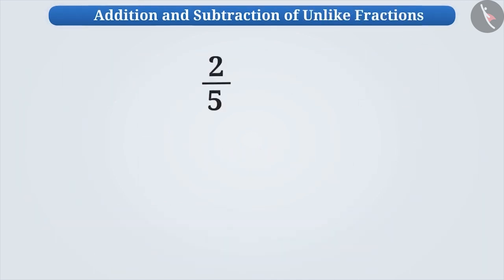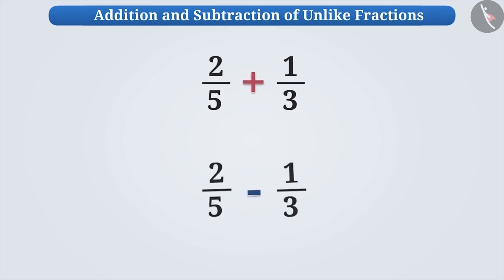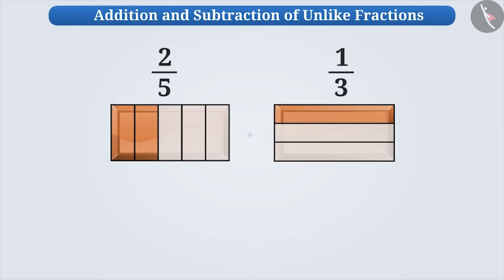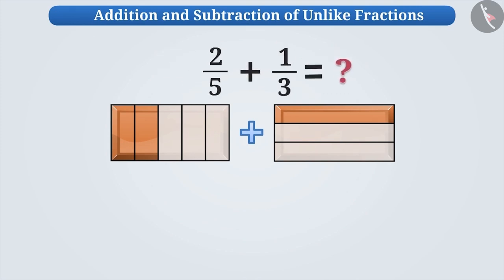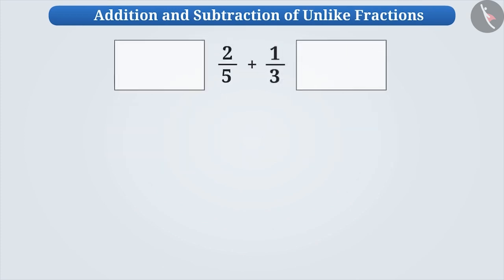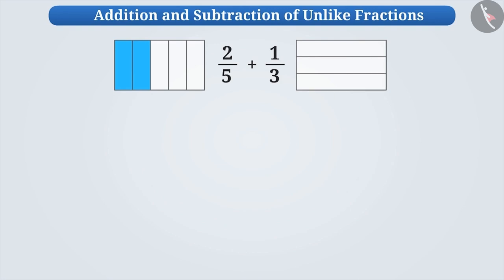Now let us understand the addition and subtraction of unlike fractions. Let us find out how much chocolate we get by adding two by five parts and one by three parts of a chocolate. To do so, first we make two equal rectangles. To represent the fraction two by five, we divide the first rectangle into five equal parts and shade two parts of it. Similarly, to represent the fraction one by three, we divide the second rectangle into three equal parts and shade one part of it. Since the size of the parts is not equal, we cannot add them directly.